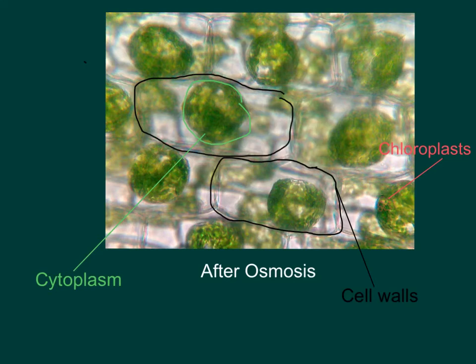In plasmolysis, the cytoplasm splits from the wall and is no longer touching it, and contracts into the middle. This happens because during osmosis, we used salt water, so the salt attracted the water out of the cell and made it so that the cytoplasm became dry and clumped up, contracting.